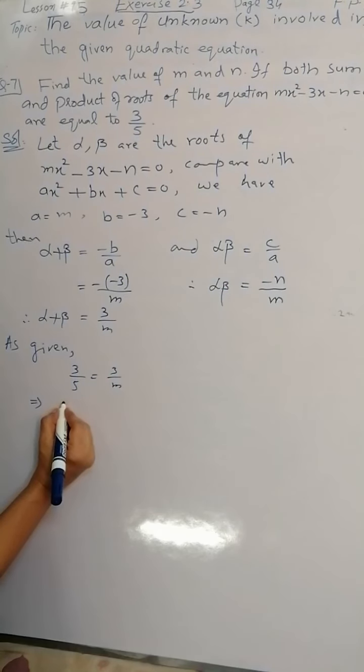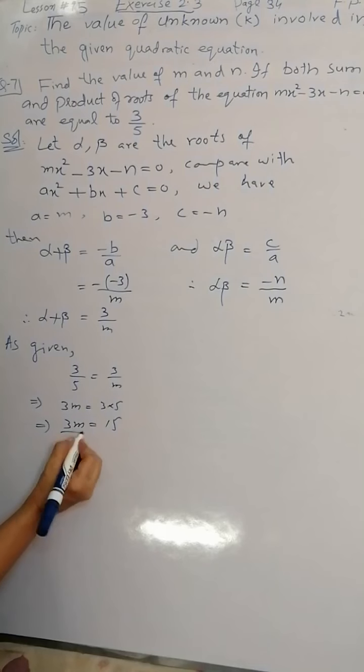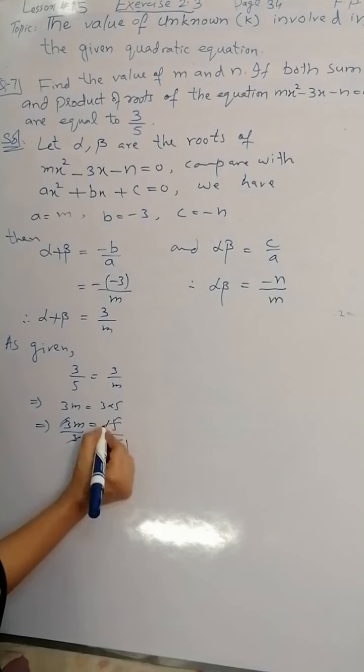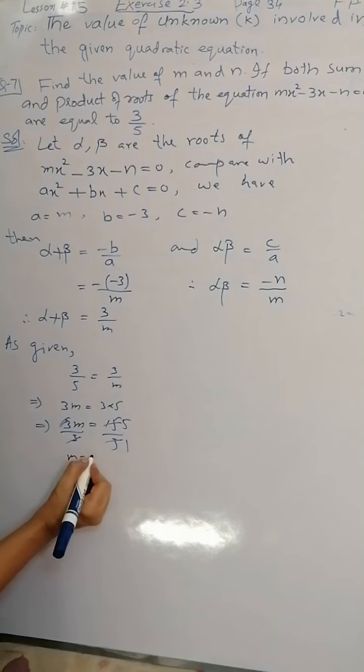By cross multiplication we get 3 times m and 3 times 5, so that 3m = 15. Dividing 3 on both sides, then we get the value of m which is 5.